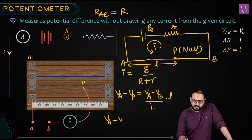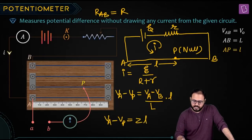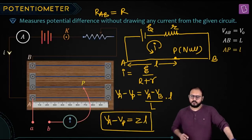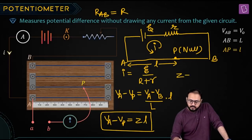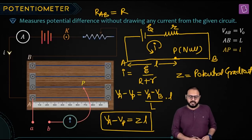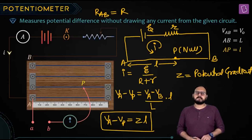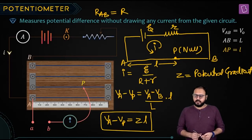Sometimes people call it Z — potential gradient. VA minus VP equals Z times l. Z is potential difference per unit length. Anything which changes per unit length is called a gradient — potential gradient. If you think this is too difficult, you are wrong. If you think this is bulky or intimidating, you are right. But if you think this is difficult, you are wrong again.